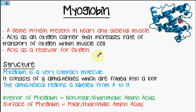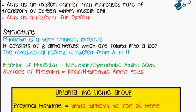Myoglobin is a heme protein which is present in cardiac and skeletal muscle. Its function is to act as an oxygen carrier that increases the rate of transport of oxygen within the muscle cell, and it acts as a reservoir for oxygen. This is highly important during periods of exercise where the muscles require extra oxygen for respiration.